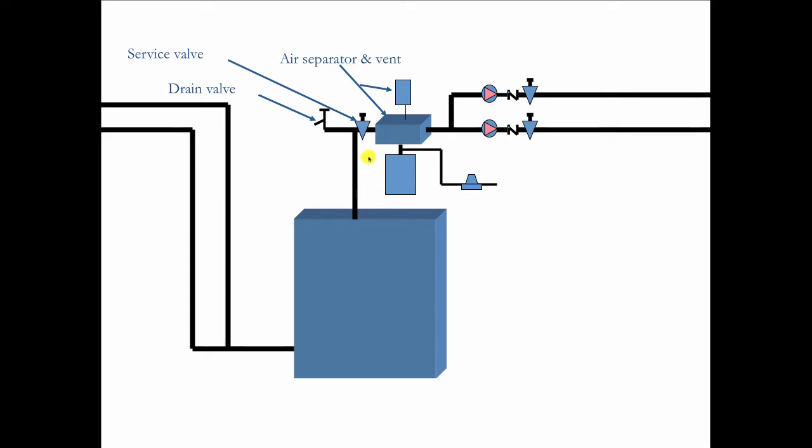Over here, we've got the air separator and the air vent and there's our compression tank and we're going to bring in the fill valve at the point of no pressure change. So that will never be affected by the circulator. It'll never be able to feed once when the circulator comes on, giving us an undersized compression tank.